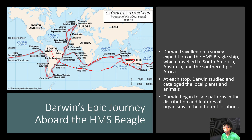Now let's talk about Darwin's voyage aboard the HMS Beagle. Darwin traveled on a survey expedition on the HMS Beagle ship. He traveled to South America, and to Australia, and to the southern tip of Africa. At each stop, Darwin studied and cataloged the local plants and animals, and began to see patterns in the distribution and features of organisms in the different locations.